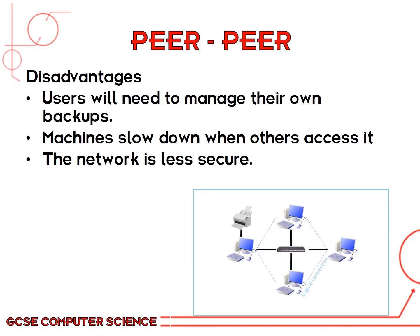The main disadvantages of a peer-to-peer network are that all users need to manage their own backups and back up their own data. The machines will also slow down when others access them — if you download a file from another computer, that computer will slow down significantly. This type of network is also far less secure because you have many computers all connected to each other.